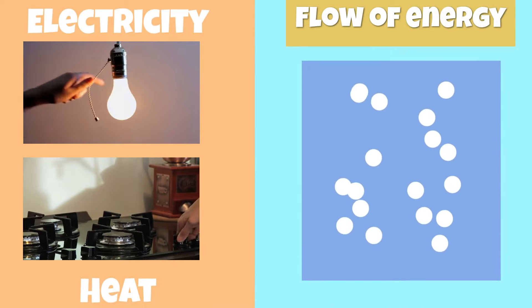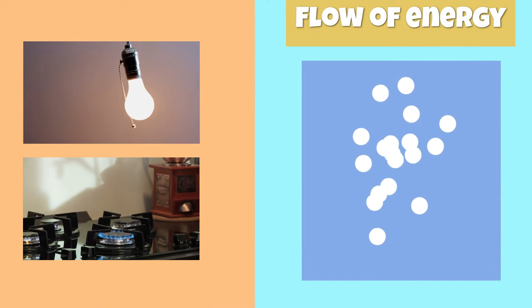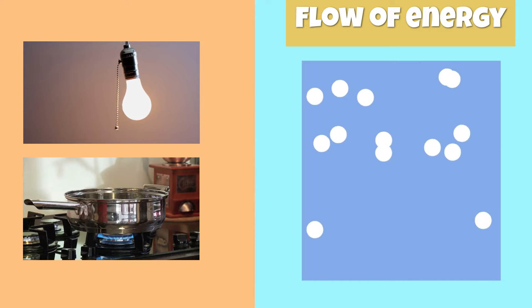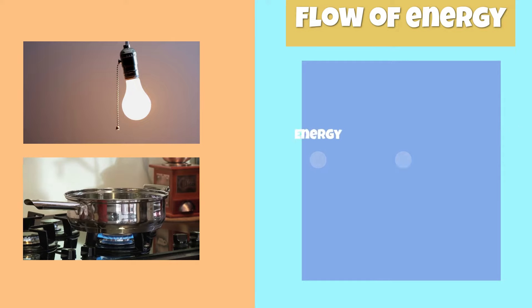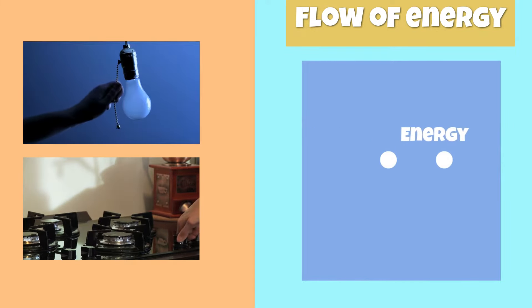When electricity or heat flow through an object, they cause the atoms inside to move rapidly. This movement allows for energy to be passed from one atom to another atom, which can result in an electric current or heat.